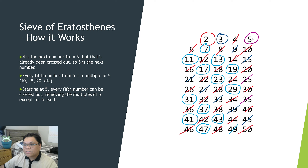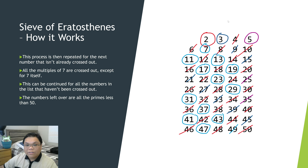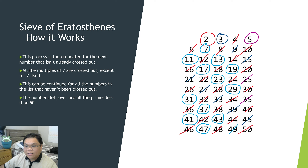After we cross out those numbers, we go to 6, but 6 is already crossed out. So we go to the number 7 and start crossing out multiples of 7. We start at 7, go up 7 to 14, and cross out all multiples of 7: 14, 21, 28, 35, 42, 49.